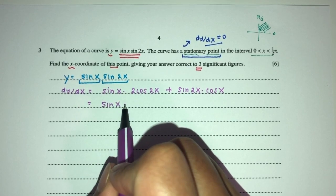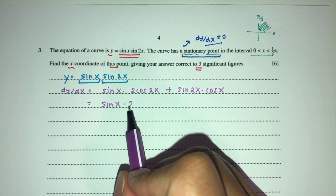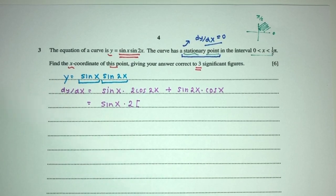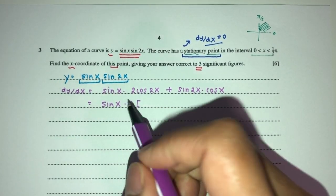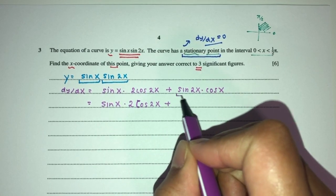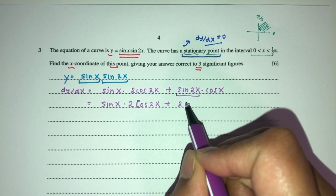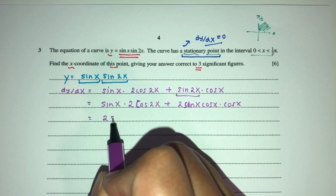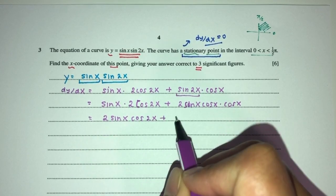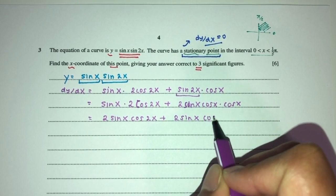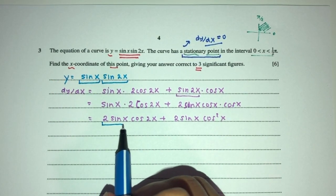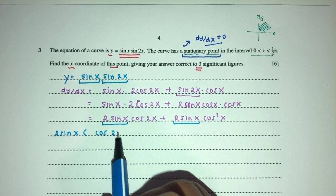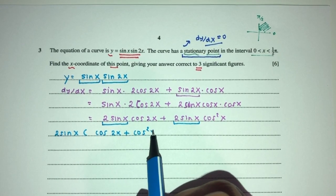Now simplifying — we have 2x in sin 2x and x terms in the other parts. Here we have sin x times 2 cos 2x. We can break cos 2x down. But first let's factorize. That gives 2 sin x cos 2x, plus 2 sin x cos² x. You can see 2 sin x is common in both. Factorizing out: 2 sin x times (cos 2x plus cos² x) is my dy/dx.